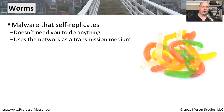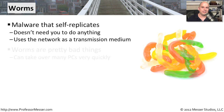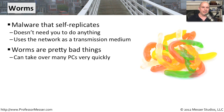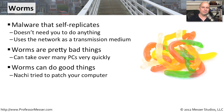A worm is a virus that can live on its own — it doesn't need you to run an application, click anything, or connect itself to any other part of your system. It can roam the network on its own, is self-replicating, and uses your network to move between systems. One worm can infect many machines in minutes, and some worms traversing the internet have infected massive numbers of devices in less than an hour.